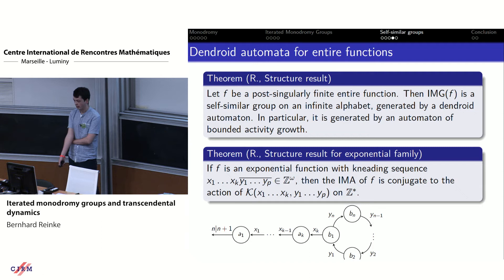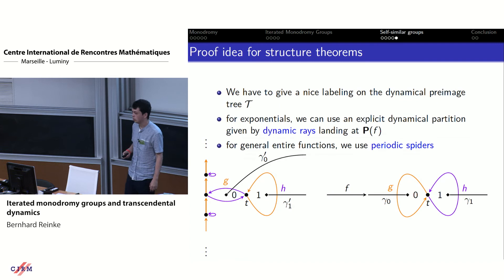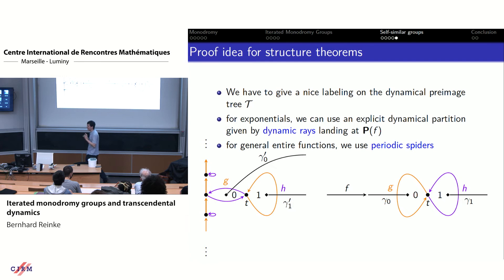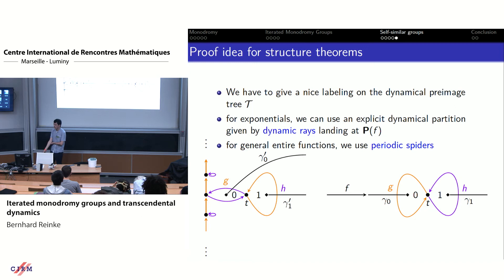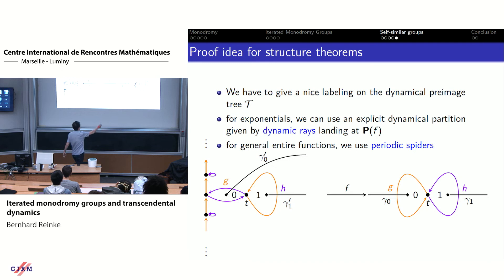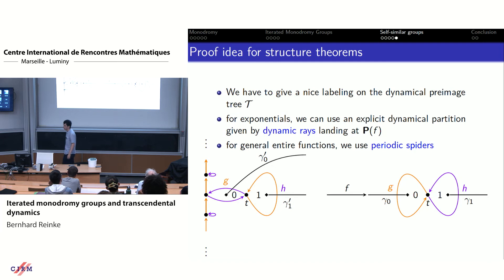The main structure result is: if we have a post-singularly finite entire function, then the iterated monodromy group can be given by such a dendrite automaton, which in particular implies bounded activity growth. For polynomials and exponential functions, there is a very explicit description of the resulting automaton based on the kneading sequence of the function in the exponential family. The way to arrive at these results is to use a nice labeling on the dynamical pre-image tree — for exponentials using an explicit dynamical partition given by dynamic rays, and for general entire functions using periodic spiders up to homotopy.